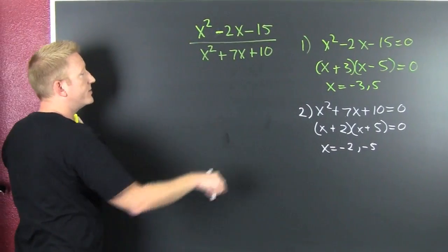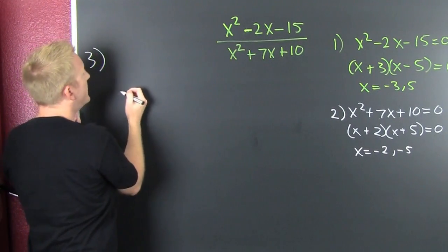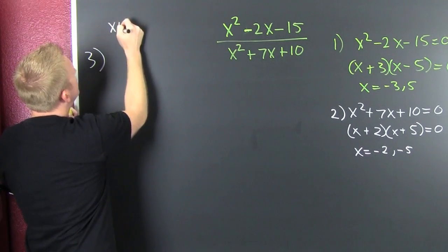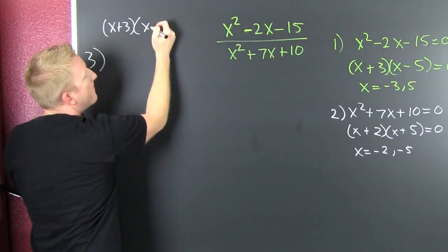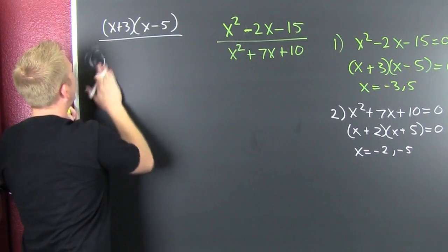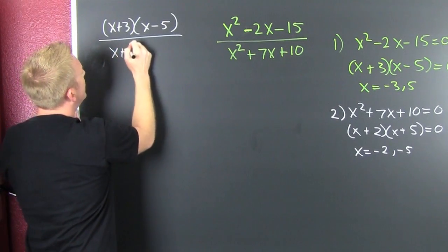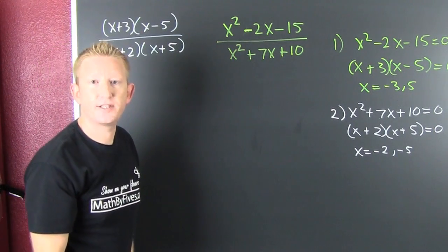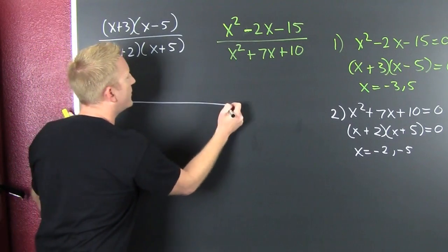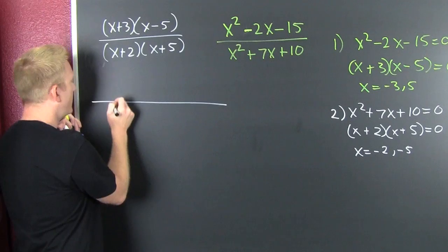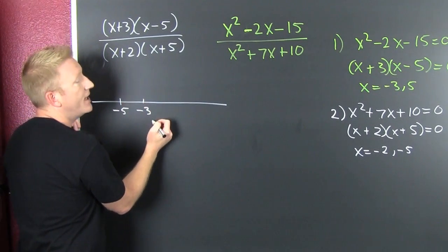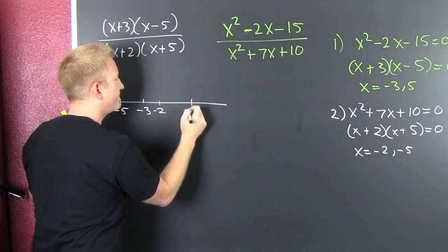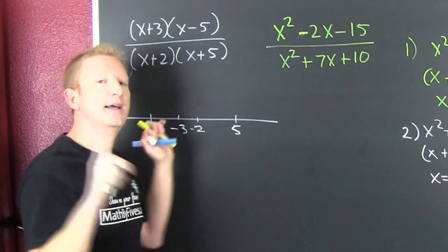I need to test intervals. I'm gonna put all of those zeros on one number line and I want to test the expression in fully factored form. My numerator was (x + 3)(x - 5) and my denominator was (x + 2)(x + 5). I put my zeros on the number line: minus 5, then minus 3, then minus 2, then 5. I want to test the values in between them — not those exact values.